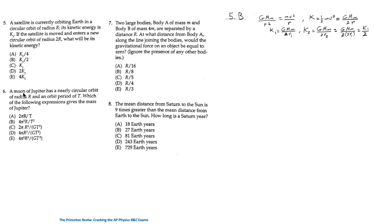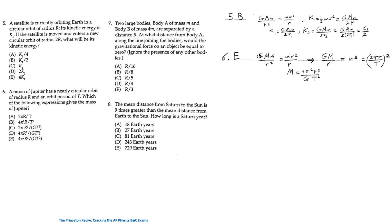For question 6: a moon of Jupiter has a nearly circular orbit of radius r and period t. As in question 5, the gravitational force provides the centripetal force. From this, G·M / r = v², and the linear speed v = 2πr / t (circumference over period). Solving for the mass of Jupiter gives M = 4π²r³ / (G·t²). The answer is E.